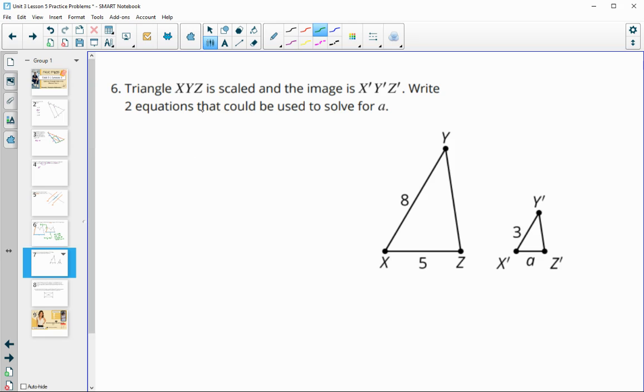Number six. Triangle XYZ is scaled, and the image is X prime, Y prime, Z prime. Write two equations that could be used. So we know that these are similar, and we just need to write two equations to solve for A. So one could be to compare A to three. So I could do A divided by three. And when I do that, then I would just do a similar thing in the other triangle. So I went A divided by three, so now over here I'm going to do the similar pattern and do five divided by eight. So there's one equation we could use.